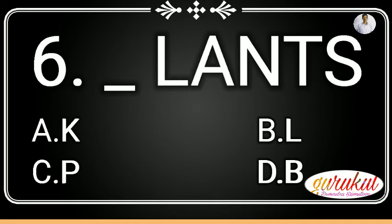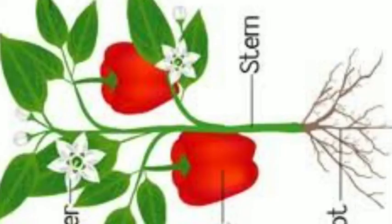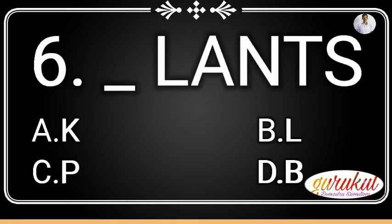Now we have to write a correlator here. The option A: K, B: L, C: P, D: B. If we put P here, then plants will be the right choice. Please subscribe to this channel.